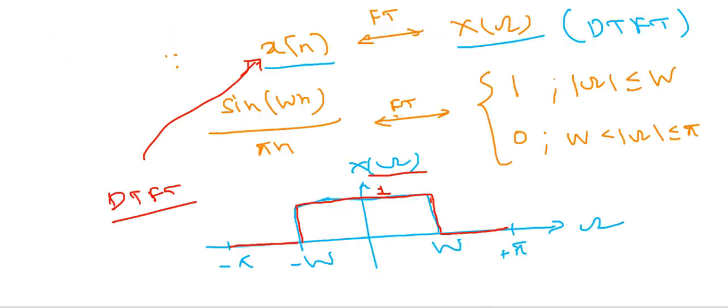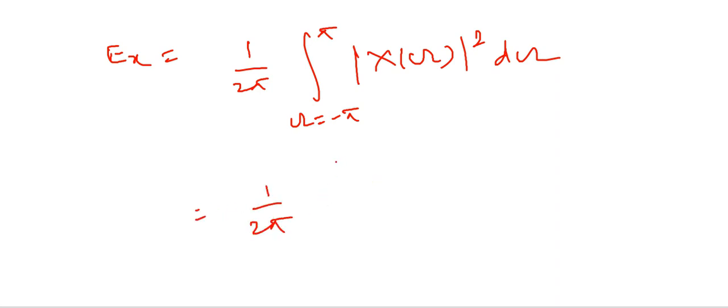So we can calculate Ex is 1/(2π) times the integral from -π to π of |X(ω)|² dω. And we will have 1/(2π) from -ω to +ω. It is 1 and 0 otherwise.